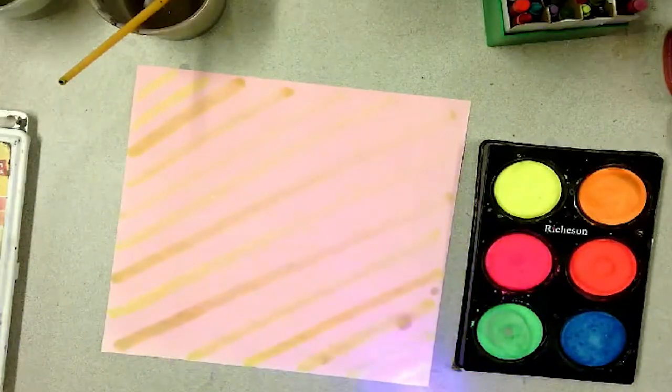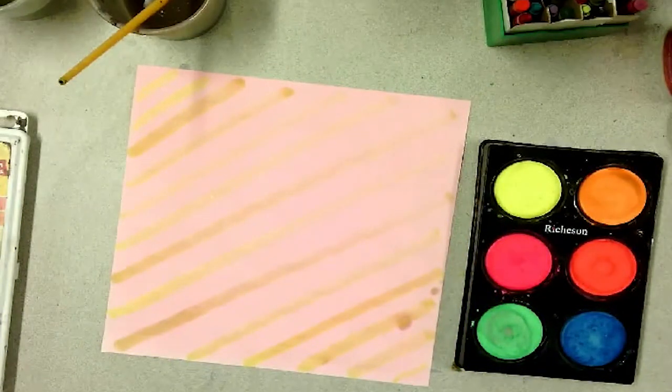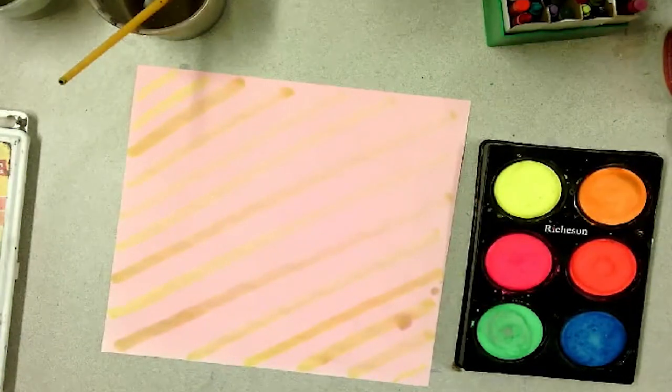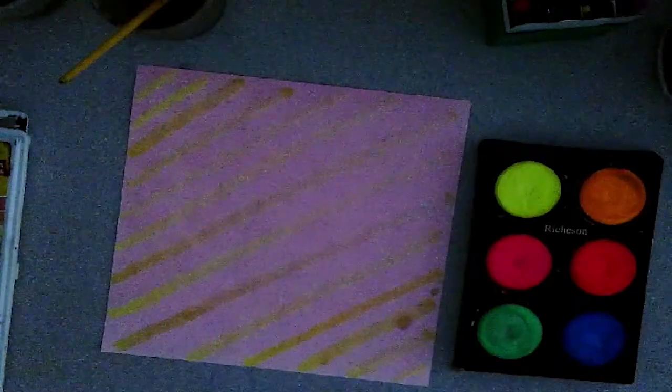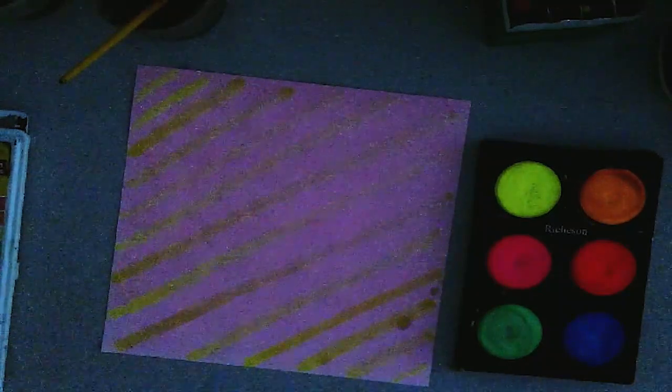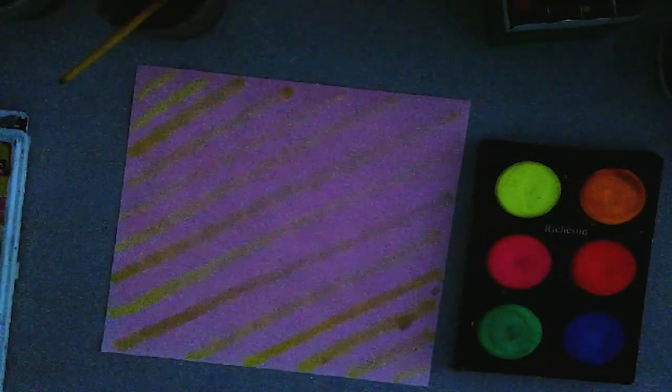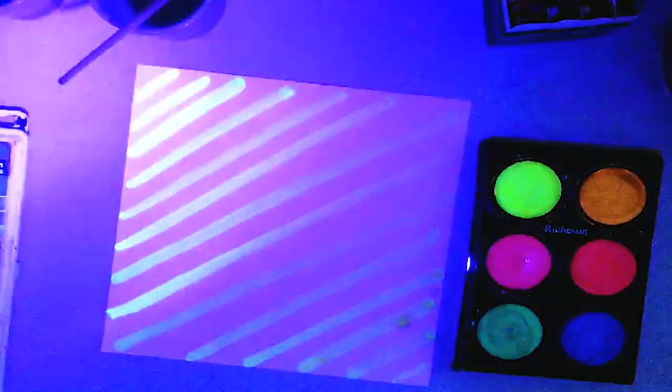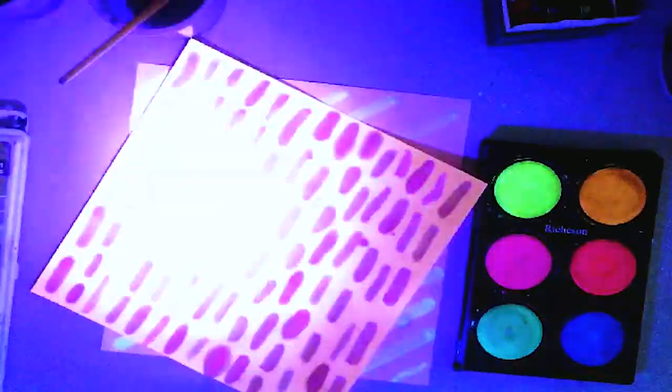The cool thing about this paint is that it is black light reactive. It does not actually glow in the dark if it is just in a dark room, but if you use a black light or a UV light you will see the colors glow and pop off your page. To really see that we could turn off the lights and we could see that when we use a black light flashlight that these colors are glowing vividly on our page.